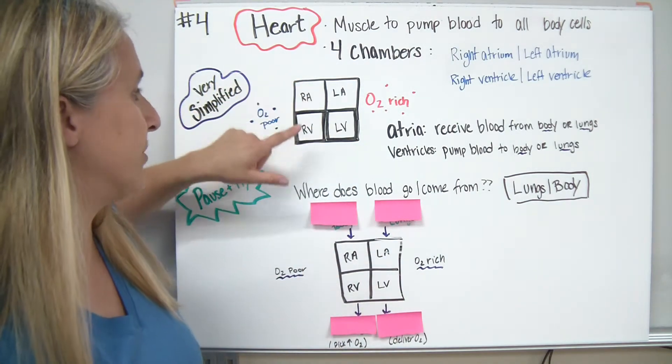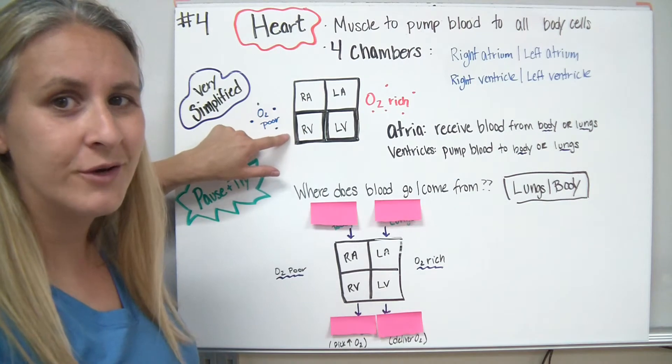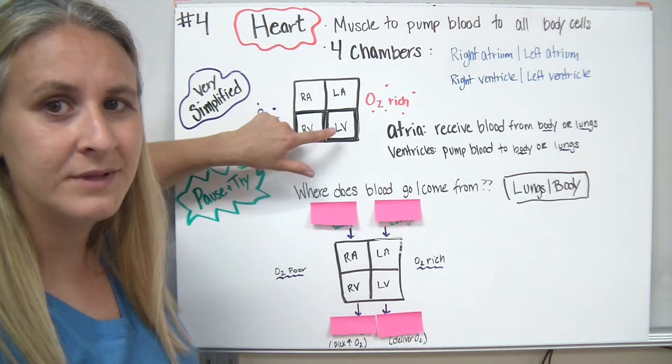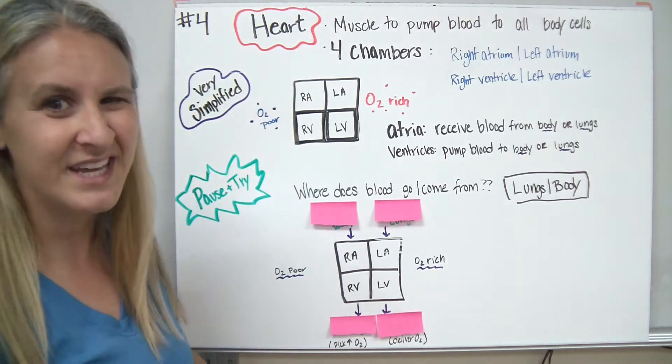So the right atria, upper chamber, right ventricle, lower chamber, left atrium, left ventricle. Typically, they tend to get abbreviated.